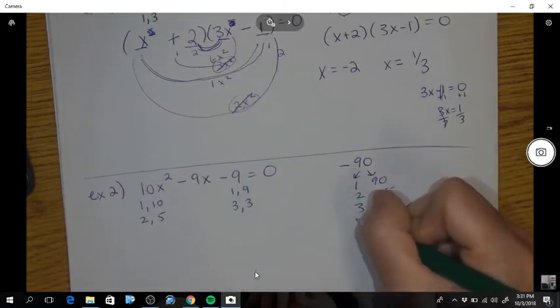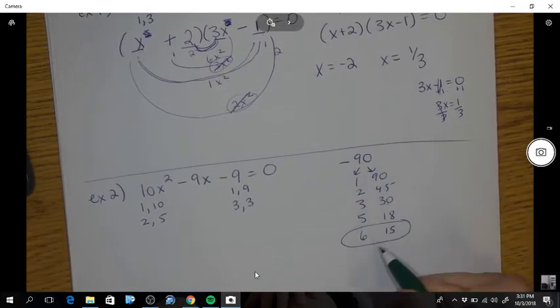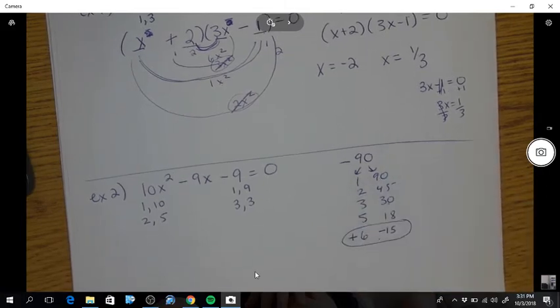We're trying to get a combination that will give us the middle number. So let's keep going. It's not divisible by 4. 5 and 18, 6, and 15. There we go. We need to get a negative 9 out of this. So that's my combination.